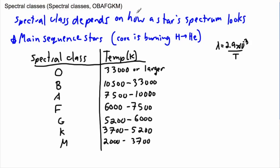Ones like this will appear sort of bluer, whereas ones way down here will appear redder. Ones like a G star will appear sort of yellow.